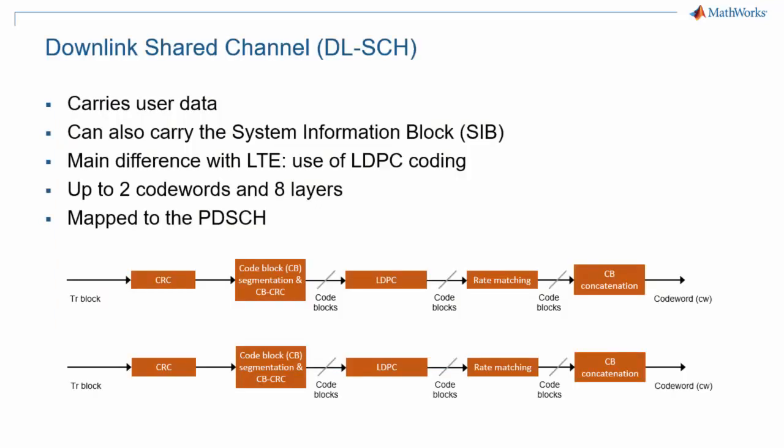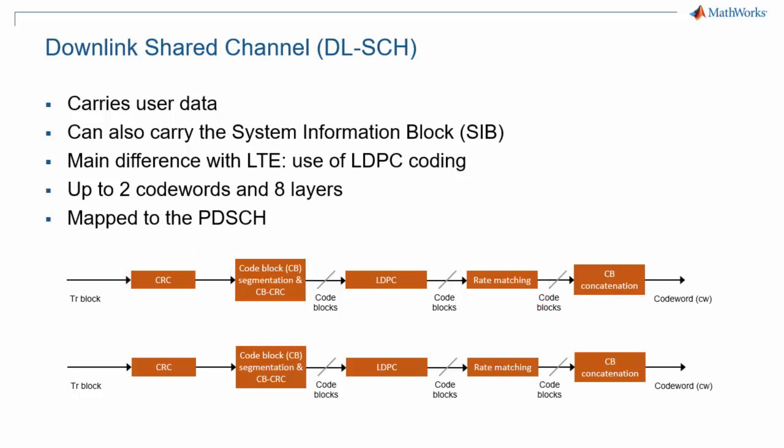The downlink shared channel, or DLSCH, is the channel that carries user data. It also carries other pieces of information, such as the different types of system information blocks, or SIB. The coding chain includes the usual steps, such as CRC, code block segmentation, rate matching, and concatenation — all steps we're familiar with from LTE. The main difference with LTE is the use of LDPC coding.